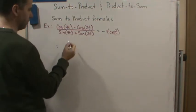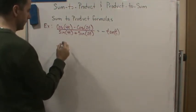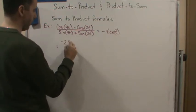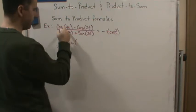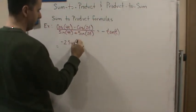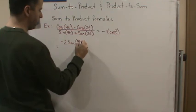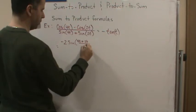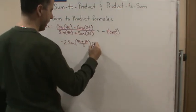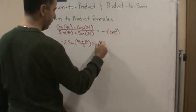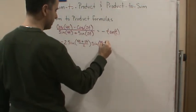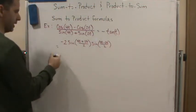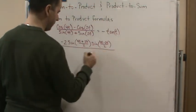So this is going to give me negative 2 sine. Now this is my alpha and beta, so it's going to be 4t plus 2t over 2, sine 4t minus 2t over 2. So that's going to be the top divided by the bottom.